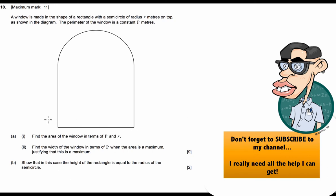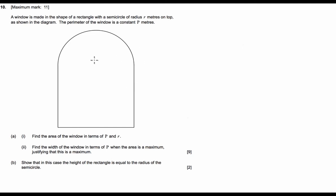So first we're going to find the area of the window in terms of p and r. To do this, we're first going to find an expression for the perimeter. We'll put in our radius of the semicircle and label it r. The height of our rectangle we're going to label h, and the base of our rectangle is going to be equal to 2 times the radius.